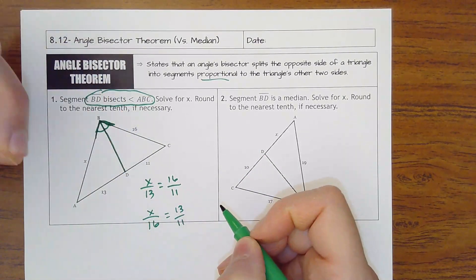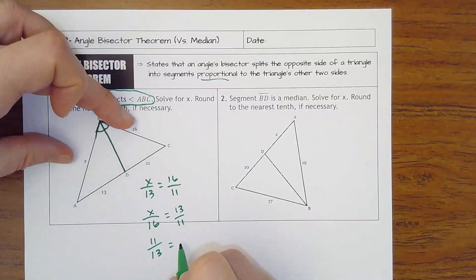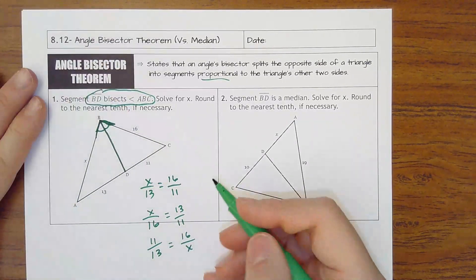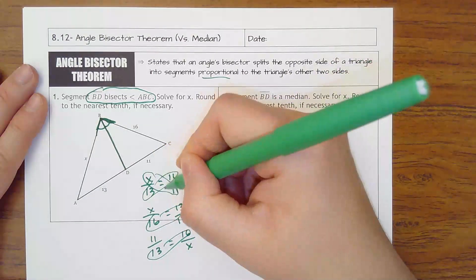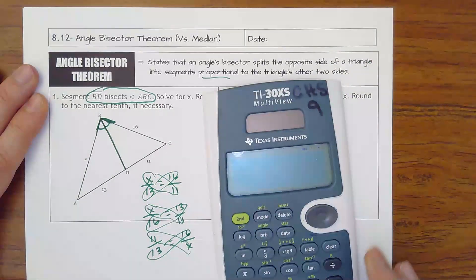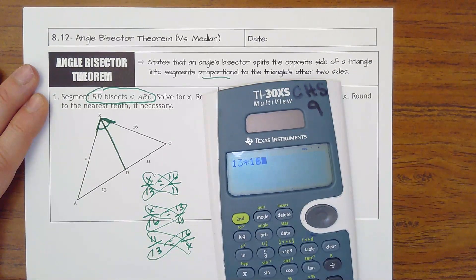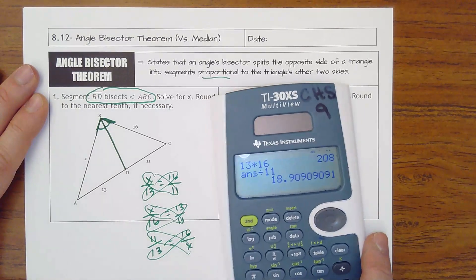You could do 11 to 13 as 16 is to x. Every one of these you should be taking 13 times 16 and then dividing by 11 because you'll have 11 times x. So 13 times 16 divided by 11. 18.9.